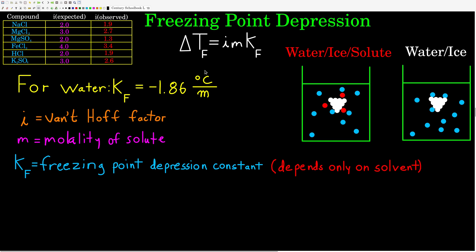The freezing point depression equation is: delta Tf equals the Van't Hoff factor times the molality of the solution times the freezing point depression constant, Kf. This Kf depends only on the solvent, but is a different number than the boiling point elevation constant. For water, Kb was 0.512 degrees Celsius per molal, while Kf is negative 1.86 degrees Celsius per molal.